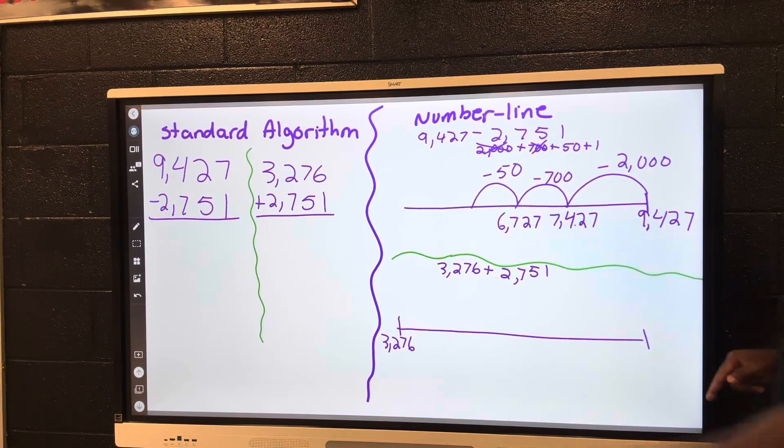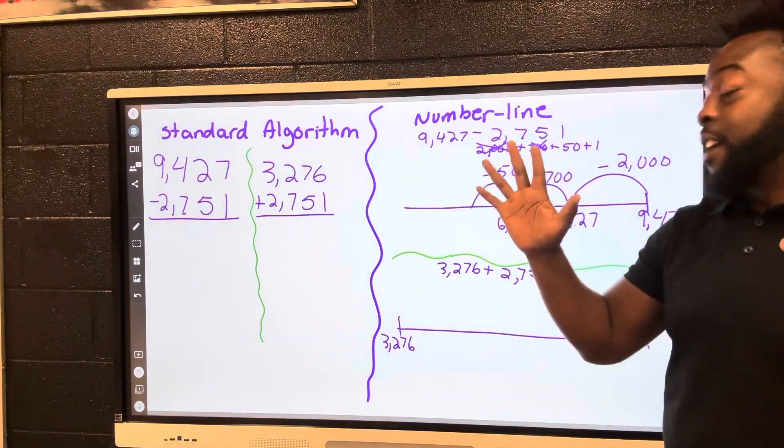So we're at 727, 717, 707, 697, 687. So this would be 6,677.